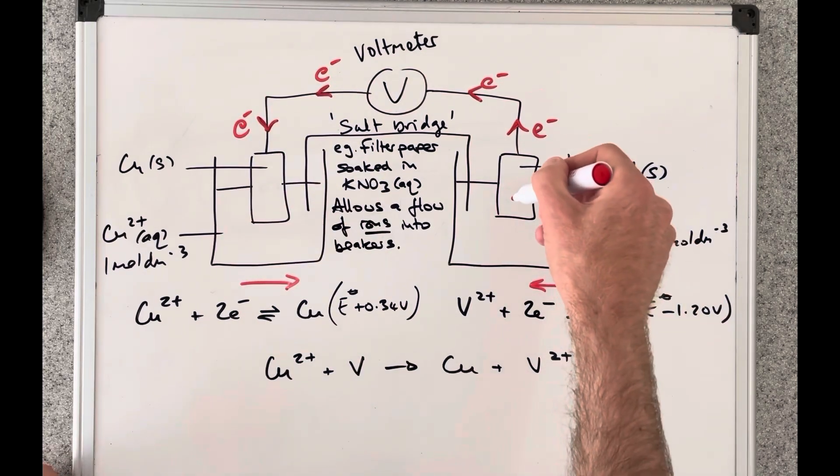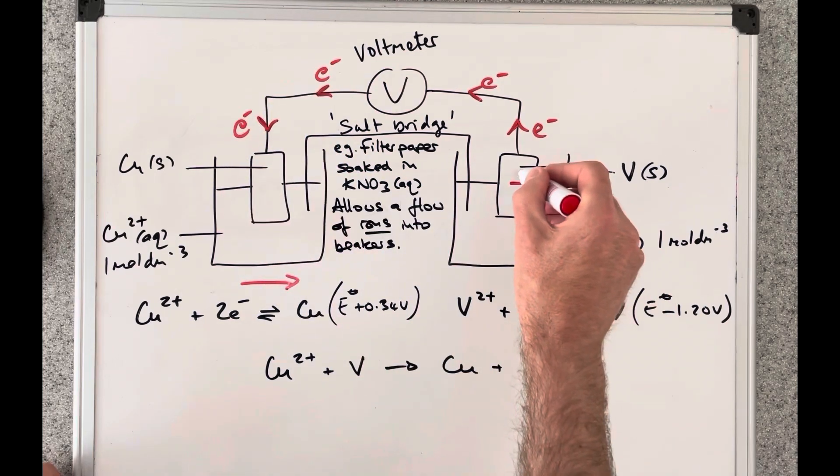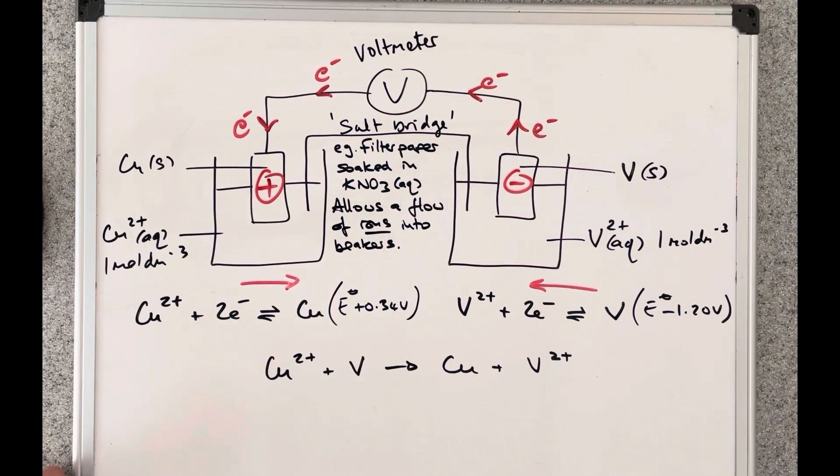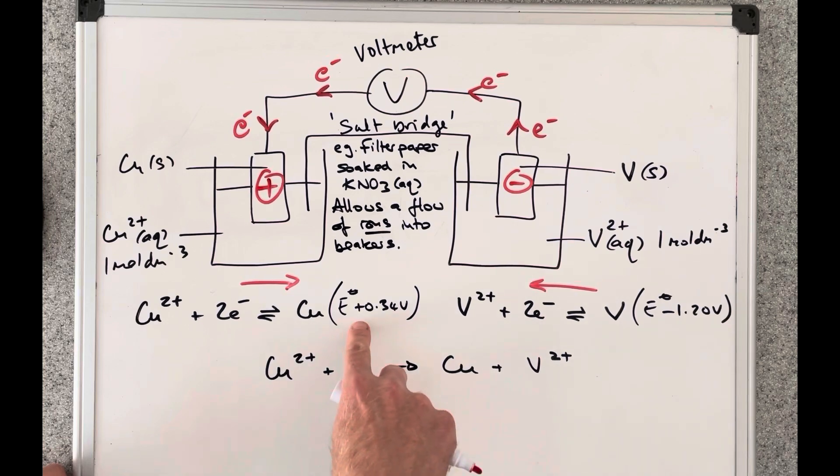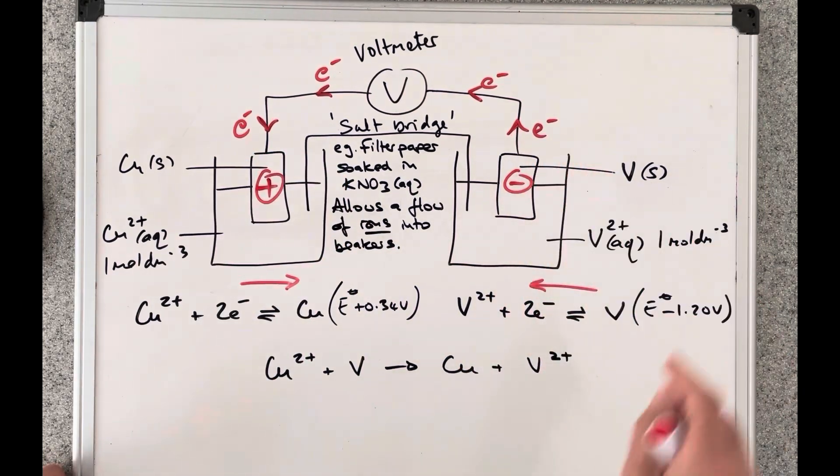Electrons flow away from the negative electrode to the positive electrode. So this is going to be your negative electrode. This is going to be your positive one. An easy way to remember the polarity of the electrodes is basically the more positive electrode potential is the positive electrode. So the copper is the positive electrode. The vanadium is the negative one.